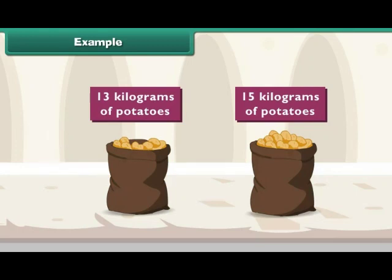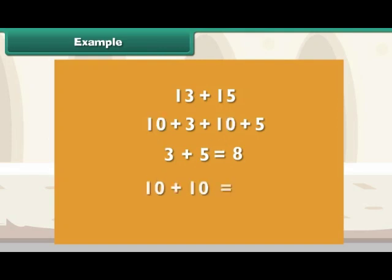How many kilograms of potatoes are there in all? To find the total quantity of potatoes, we must add 13 kg and 15 kg. Break the numbers into tens and ones. Write 13 + 15 as 10 + 3 + 10 + 5. 3 + 5 = 8. 10 + 10 = 20. 20 + 8 = 28. Therefore, 28 is the answer.